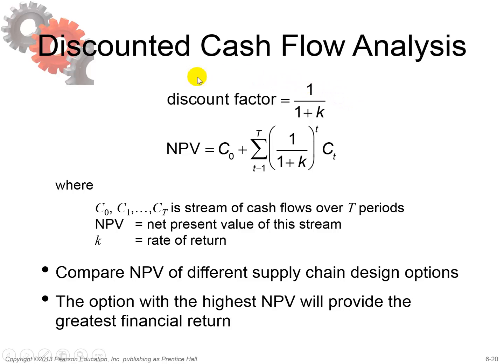This is the ratio behind the discount factor. Now we get the net present value. The net present value is the current value C-zero plus the present values of all coming years, which is the sum from one to T. When you add all of that up you get the net present value. You compare this net present value across all design options and then pick the one with the highest financial gain.